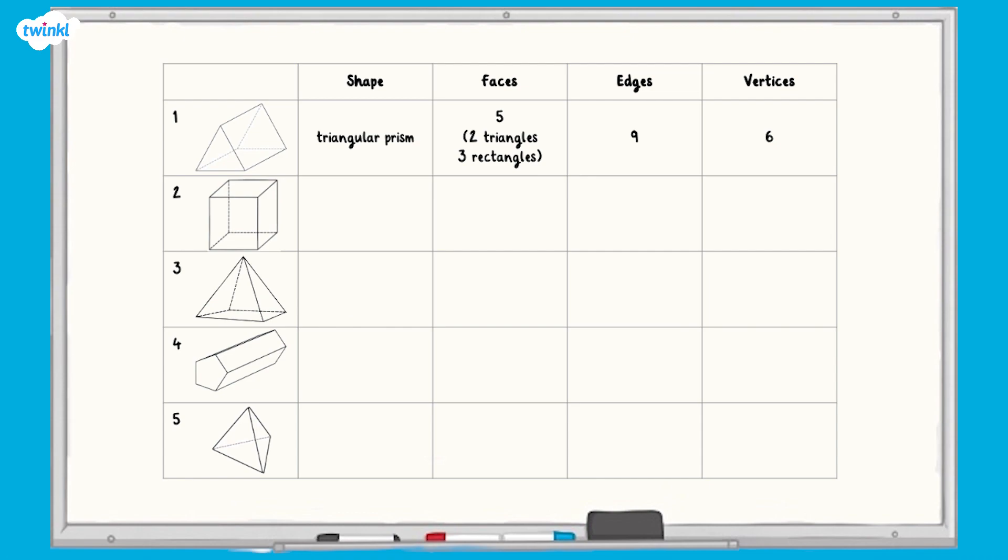Now is your turn. For each of these shapes, name it and then describe how many faces, edges and vertices it has. The first row has been done for you. Pause now while you answer the question.